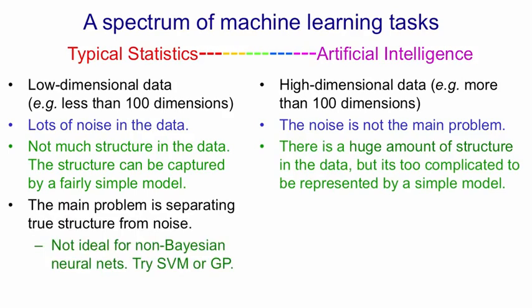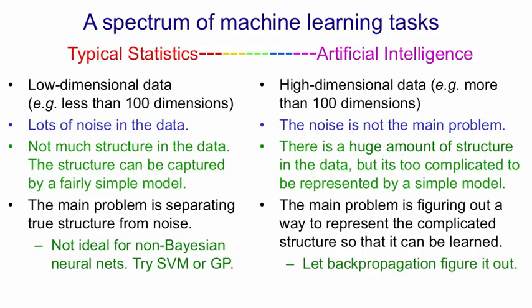In statistics, the main problem is separating true structure from noise — not mistaking noise for structure. This can be done by a Bayesian neural net pretty well, but for typical non-Bayesian neural nets, it's not the kind of problem they're good at. For problems like that, it makes sense to try a support vector machine or a Gaussian process for regression. At the artificial intelligence end of the spectrum, the main problem is finding a way to represent all this complicated structure so that it can be learned. The obvious approach is to hand-design appropriate representations, but it's actually easier to let backpropagation figure out what representations to use by giving it multiple layers and using a lot of computational power.